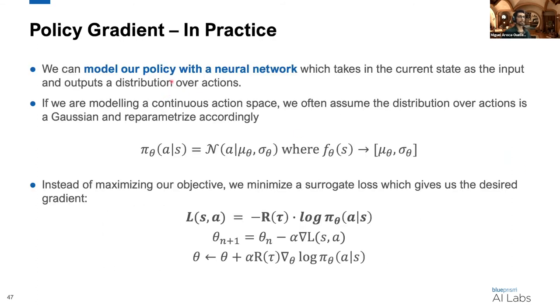So in practice, what does this look like? We can model our policy using a neural network, which takes in the current state as the input and outputs a distribution over actions. In this case, our parameters are the weights and the biases of the network. If we're modeling a continuous action space, we would be able to.